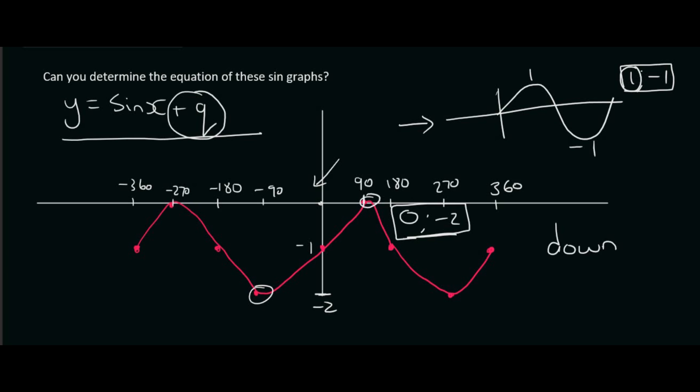And what they've done is they've moved every single point down by 1. Because this highest value, if you minus 1 from that, it goes to 0. And if you minus 1 from this one, it goes to minus 2. And that is exactly what we have over here. So this pink graph is a normal sin graph that has been moved down by 1 unit.